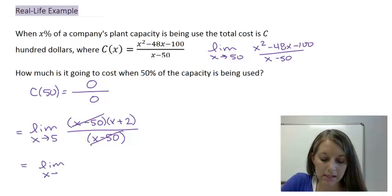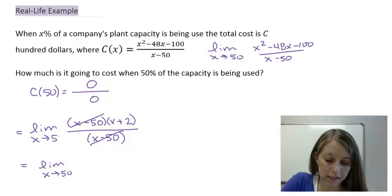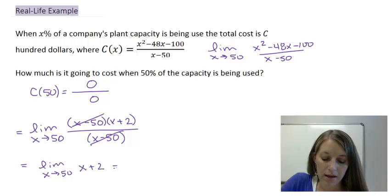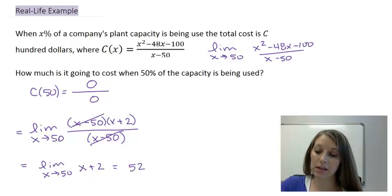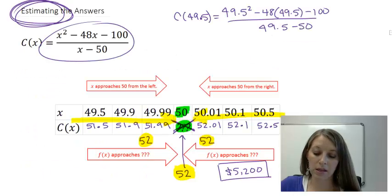My x minus 50s cancel out. That leaves me with the limit as x is approaching 50 of x plus 2. Substitute my x value back in, and that gives me 52, which is the answer that we got by using the table.